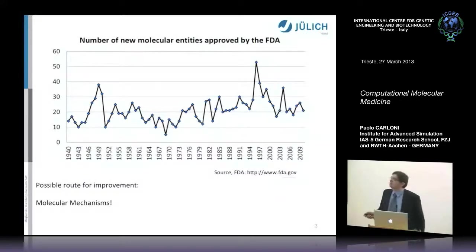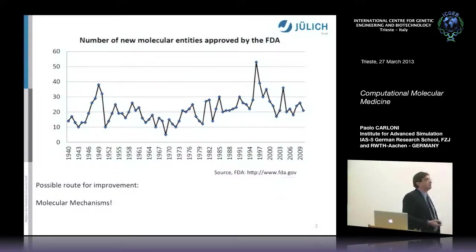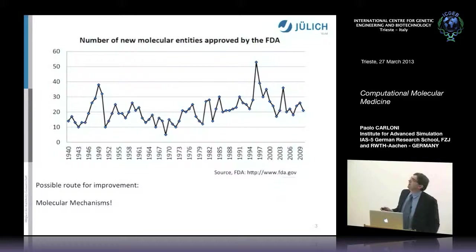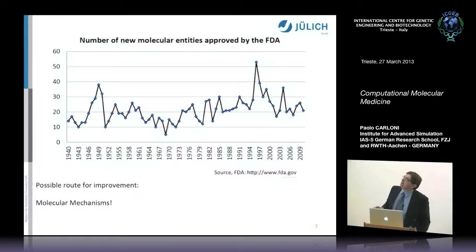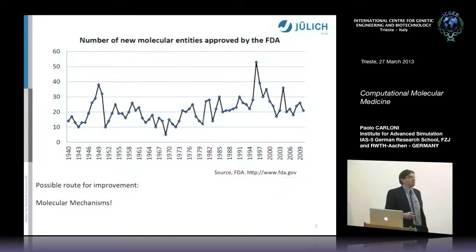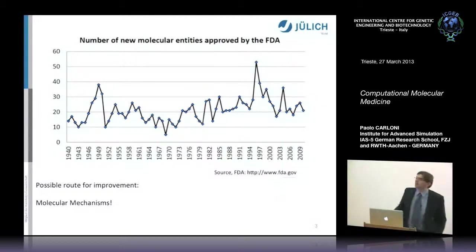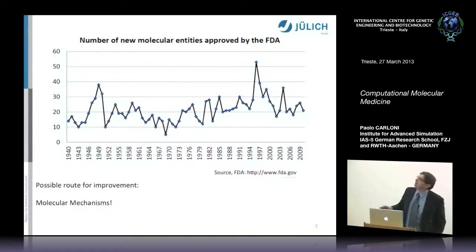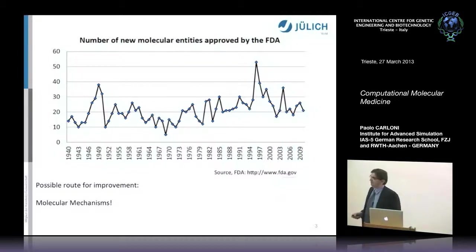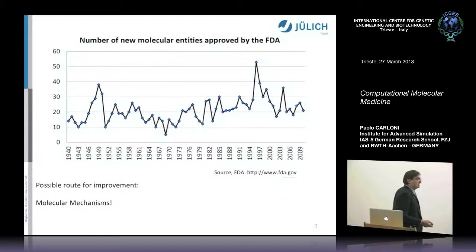Our first scientific slide reports very interesting data regarding the number of drugs approved by the Food and Drug Administration in the States. These are drugs put in the market back in the 40s up to close to today, and what we see from this graph is that the number of drugs approved every year is not improving tremendously.